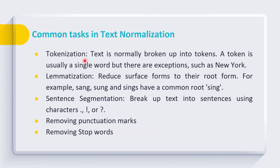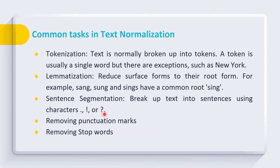Along with this, we can perform other common tasks like tokenization, where input text is broken into tokens. These tokens are normally single words, but sometimes we have exceptions — like in the case of New York, where a token is considered as a combination of two words. We also have an important task called lemmatization in normalization, where we reduce the surface forms of the word to its root form. For example, words like sang, sung, and sings are reduced to their common root, sing. Sentence segmentation is another process in text normalization where we break the text into various sentences, using characters like a dot, exclamation sign, or question mark. We also remove punctuation marks and stop words during the process of text normalization.